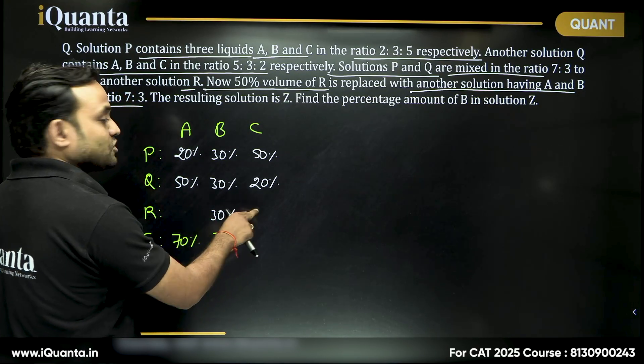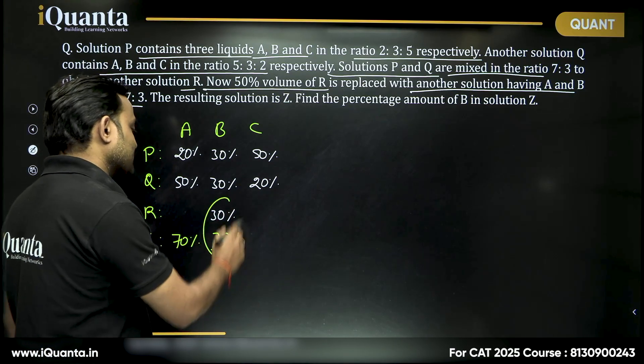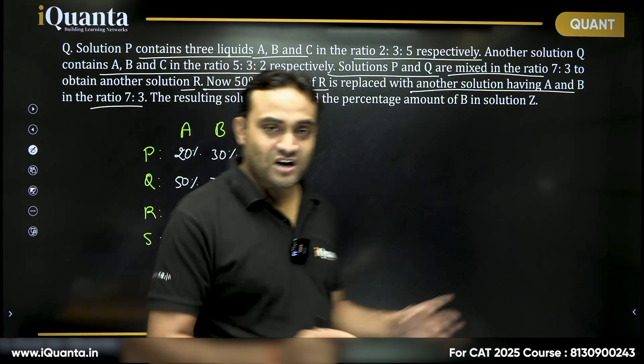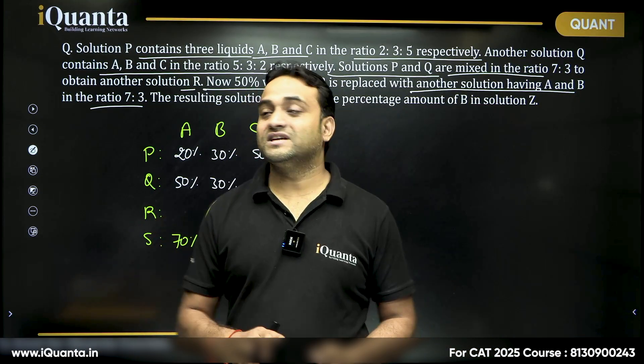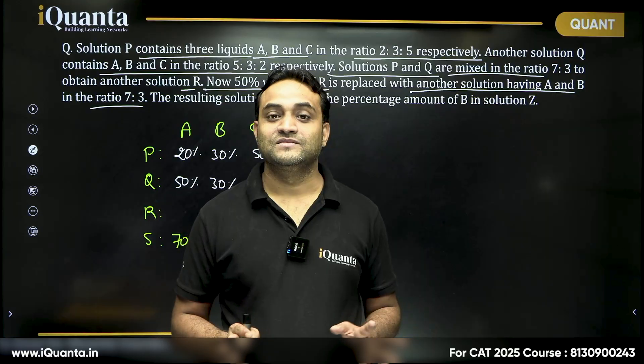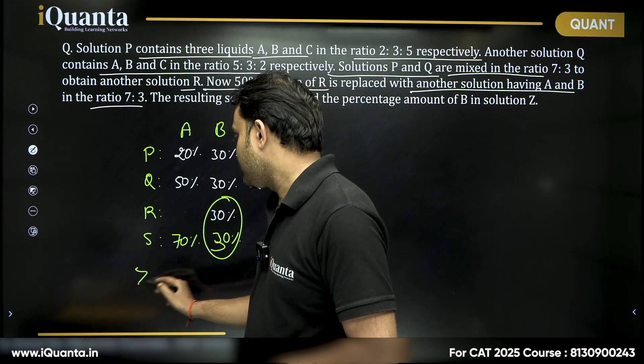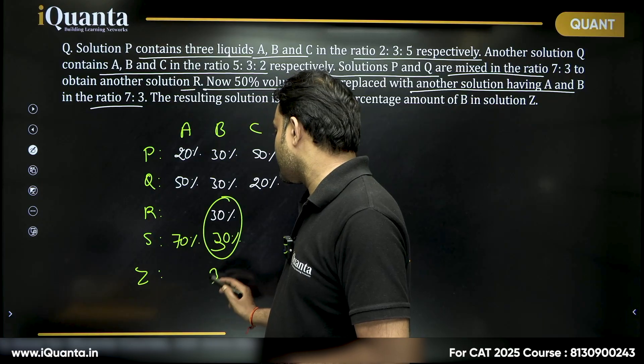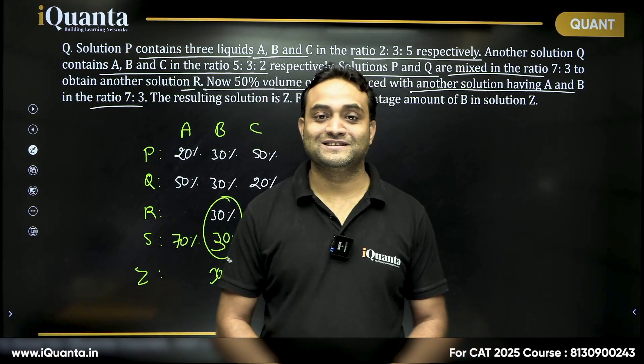So, 50 percent of this is removed, then this is added. Can I say again this is 30 and 30, does not matter in what ratio you are mixing this R with this new solution S, the percentage of B in the resultant solution Z is always going to be 30 percent, right? That is our answer, 30 percent.